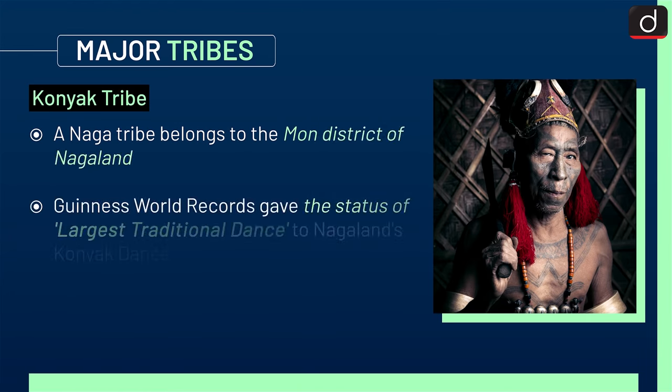Next is the Konyak tribe. The Konyak tribe is a Naga tribe which belongs to the Mon district of Nagaland. Guinness World Records gave the status of largest traditional dance to Nagaland's Konyak dance.